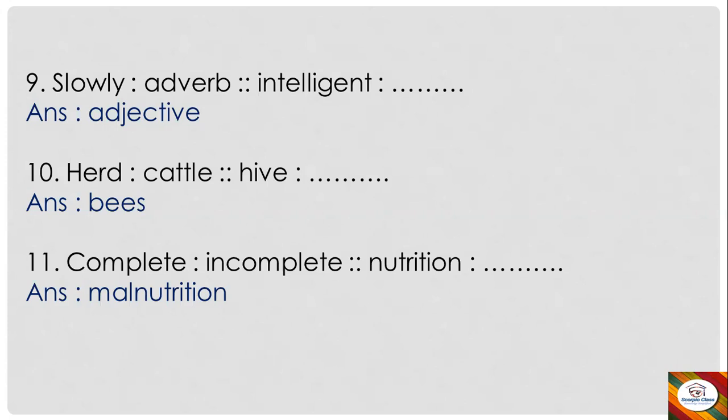Next: 'herd' is to 'cattle' as 'hive' is to dash. 'Herd' is a group of cows, buffaloes — when a group of animals are together you call it cattle. Similarly, whose group is known as a 'hive'? It's bees. When bees are in a group, we call it a hive. So: 'herd' is to 'cattle' as 'hive' is to 'bees'.